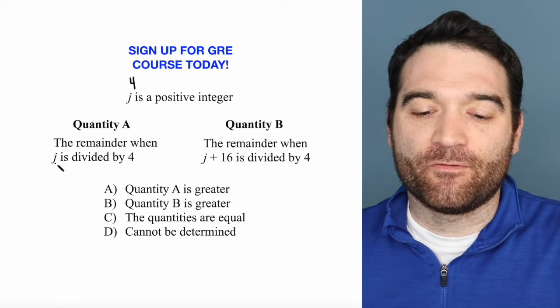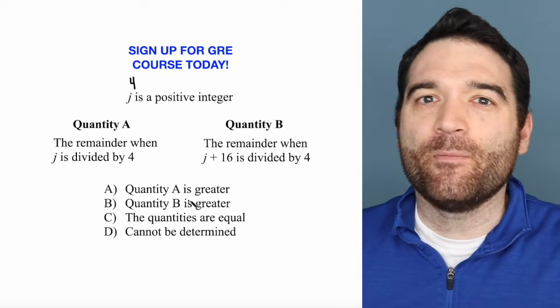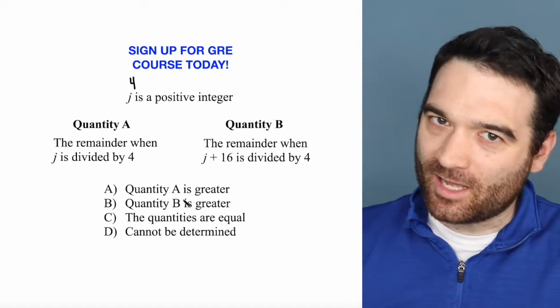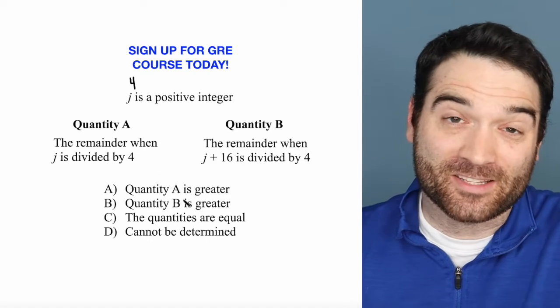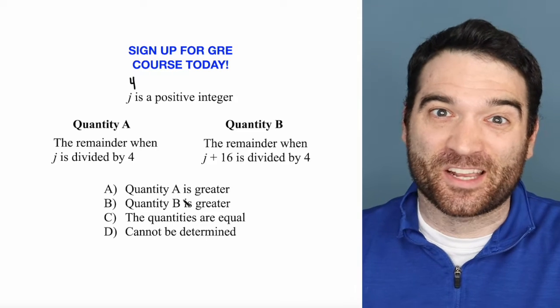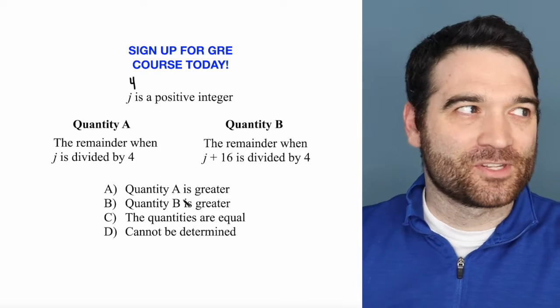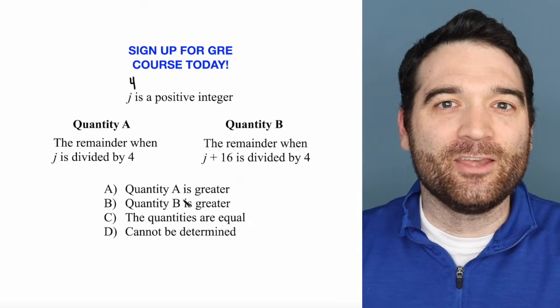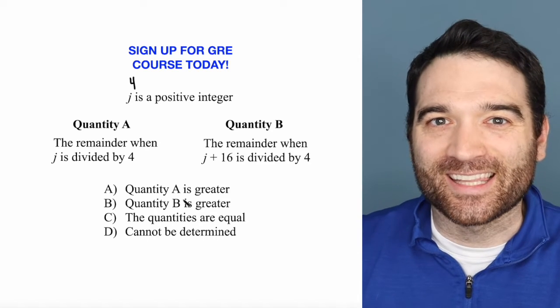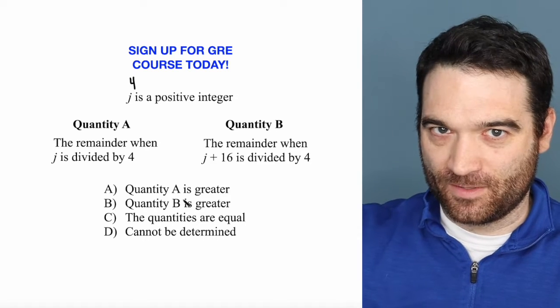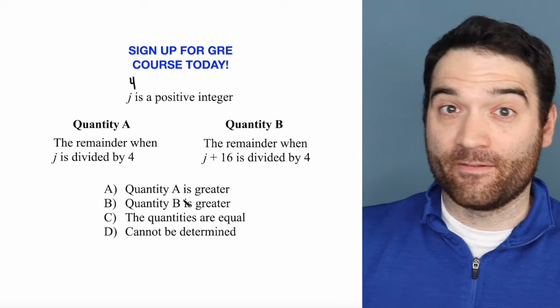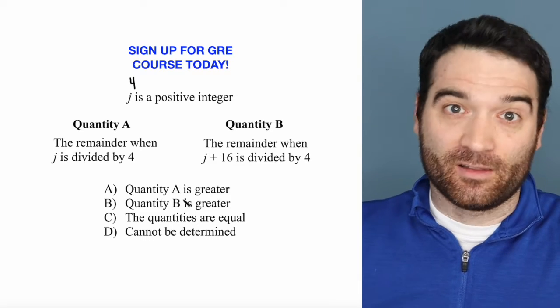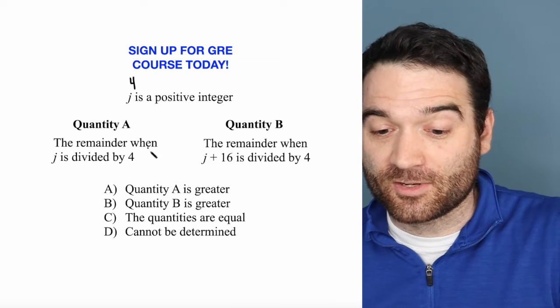So what is the remainder when 4 is divided by 4? How much is left over? Now, a lot of people are a little rusty on remainders, and that's understandable. You probably haven't done them since second grade. So a lot of people say, okay, well, 4 divided by 4 is 1, so 1. No, the remainder is how much is left over after the division. So if I divide 4 by 4, there's nothing left over. 4 goes perfectly into 4. So the answer to this is 0.